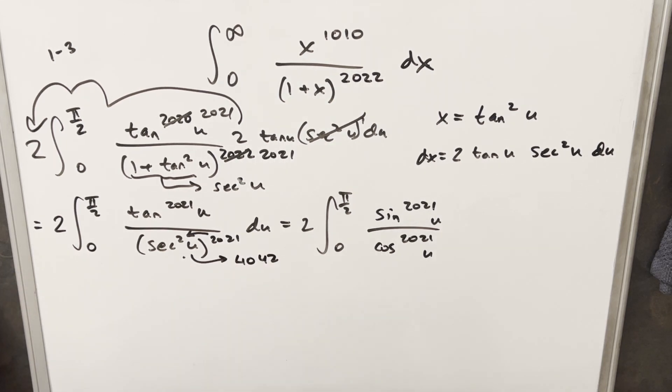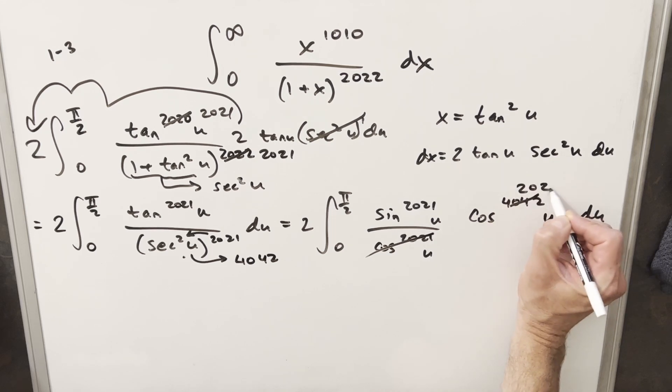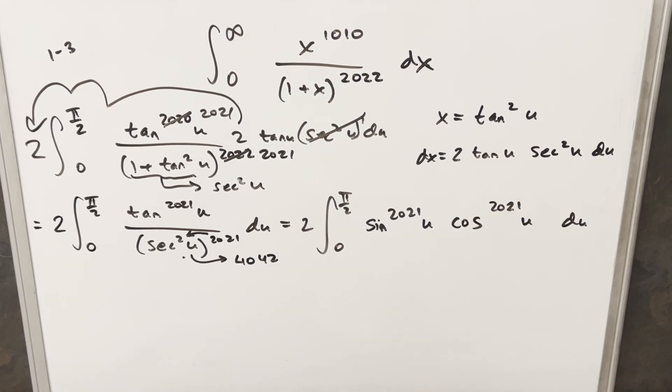But now what I'm going to do is bring the secant into the numerator. And so I'm going to write this as a cosine in the numerator as cosine 4042 u du. We can cancel 2021 of these here with 2021 of these here. And we're going to be left with 2021. And at this point, you may recognize this thing. This is actually in a perfect form for the beta function.